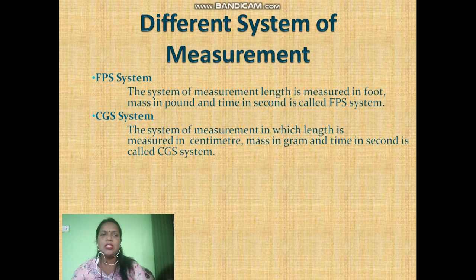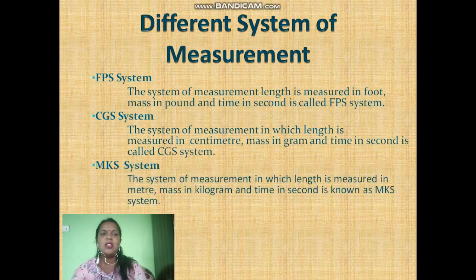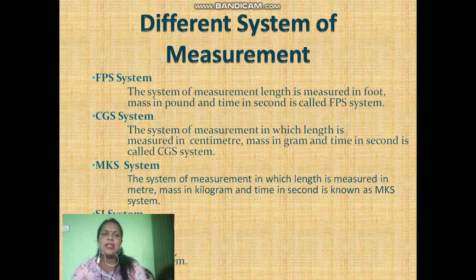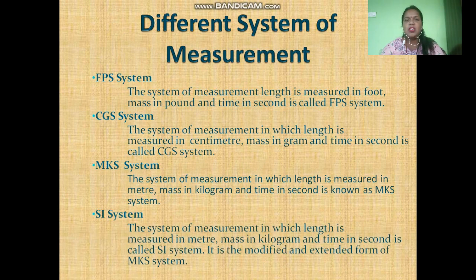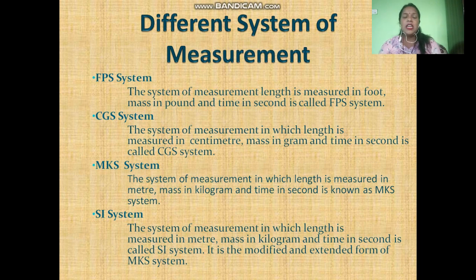MKS system — the system of measurement in which length is measured in meter, mass in kilogram, and time in second. Similarly, the last one is the SI system — the system of measurement in which length is measured in meter, mass in kilogram, and time in second. It is the modified and extended form of the MKS system.